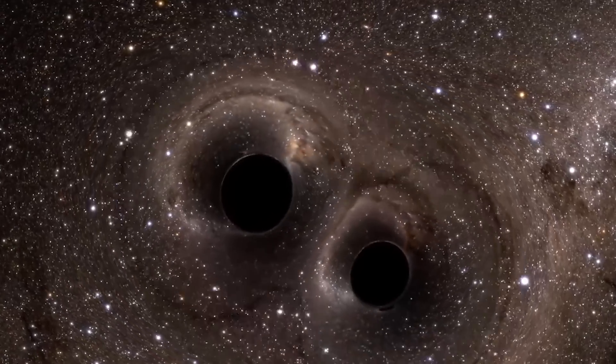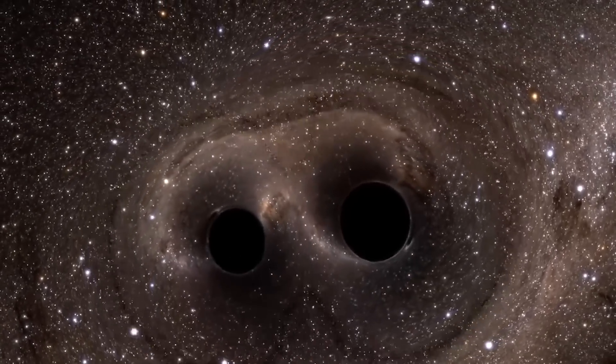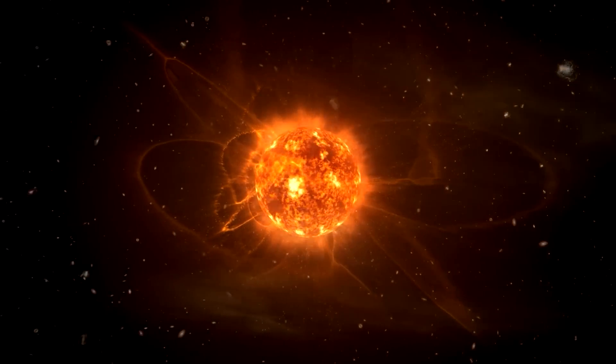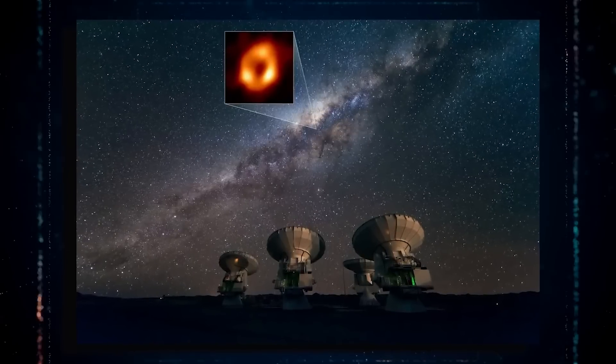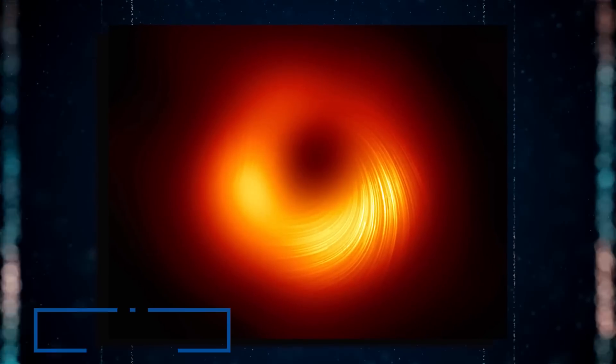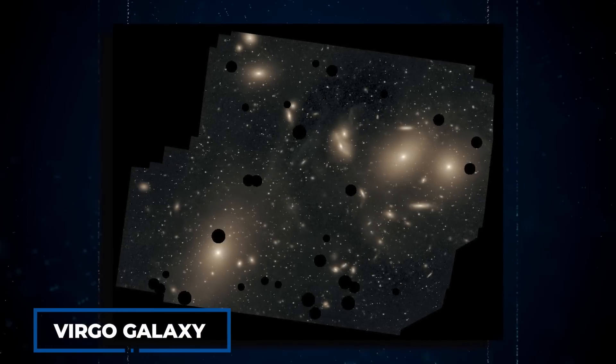Black holes can be found by observing their effect on the environment, sucking in gas, dust and stars, which become super-heated and emit radiation seen as a heat image. In 2019, the Event Horizon Telescope captured the first-ever image of a black hole and its shadow in a galaxy 55 million light-years from Earth, part of the Virgo Galaxy Cluster.